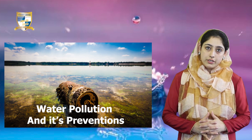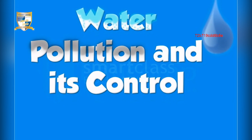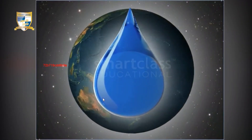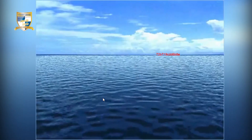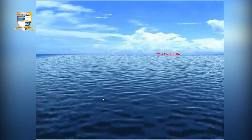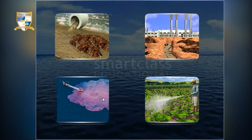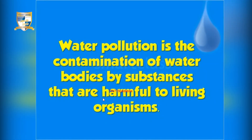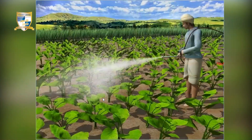Now let's have a look at a video where you will learn more about water pollution and its control. More than two-thirds of the earth's surface is occupied by water, a unique liquid without which one cannot imagine life. However, water is constantly being polluted by several human activities. Water pollution is the contamination of water bodies by substances that are harmful to living organisms. Water gets polluted by certain household, industrial and agricultural activities.